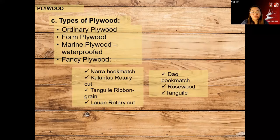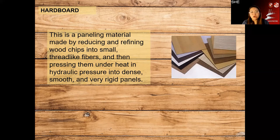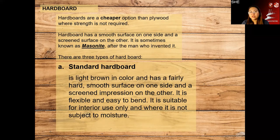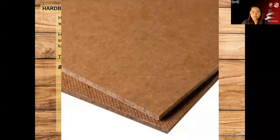We have hard board — a paneling material made by reducing and refining wood chips into small thread-like fibers, then pressing them under heat and hydraulic pressure into dense, rigid panels. Hard boards are cheaper than plywood and are sometimes known as masonite. The standard hard board is light brown in color, with a fairly hard surface on one side and a screen impression on the other — you can see this in old houses.